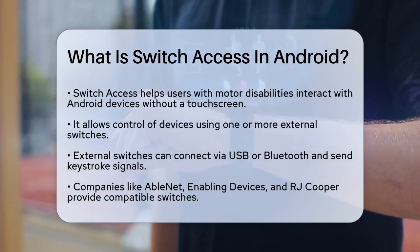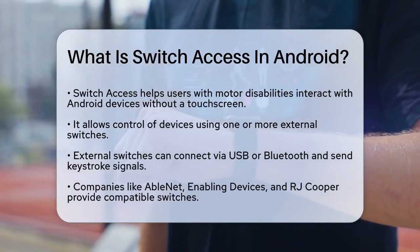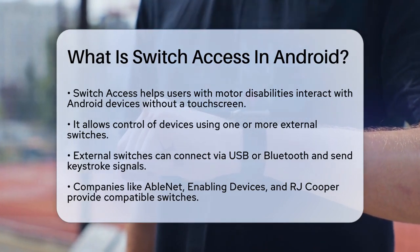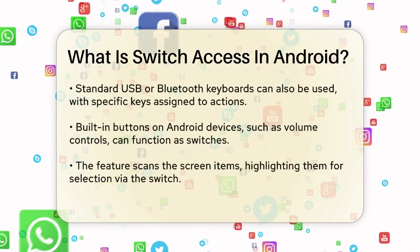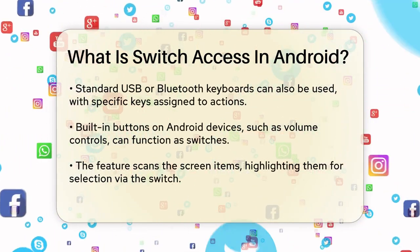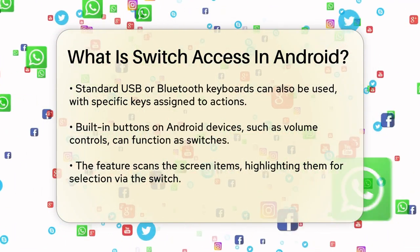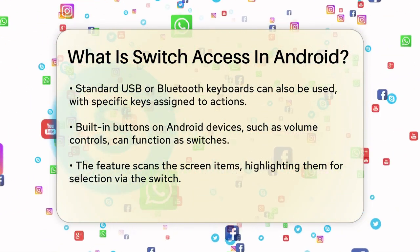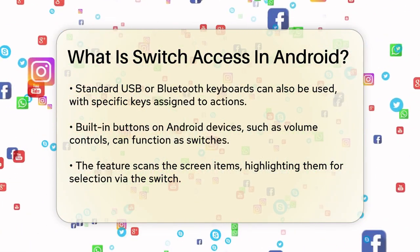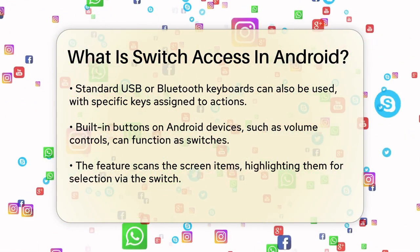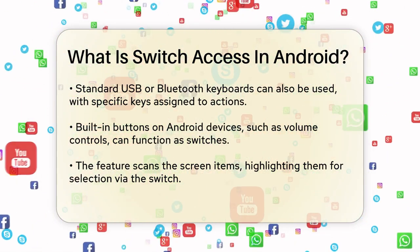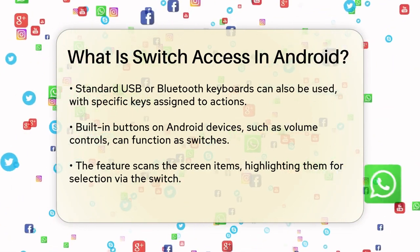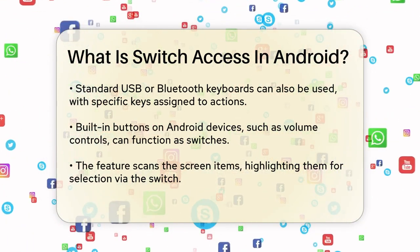To use Switch Access, you need one or more switches. These can be external devices that send keystroke signals to your Android device. Companies like Ablenet, Enabling Devices, and RJ Cooper sell these devices, which connect via USB or Bluetooth. You can also use a standard USB or Bluetooth keyboard by assigning specific keys to actions. Even the built-in buttons on your Android device, such as the volume up and down buttons, can be used as switches.